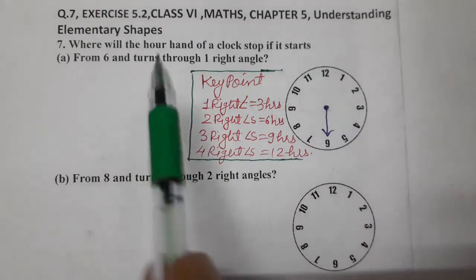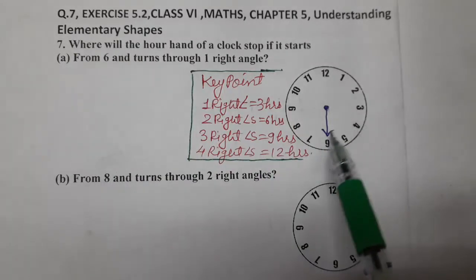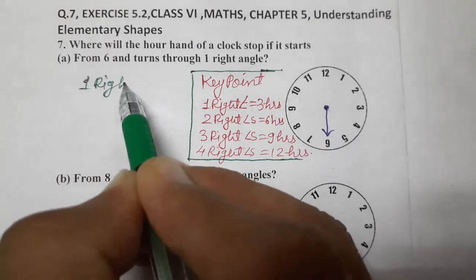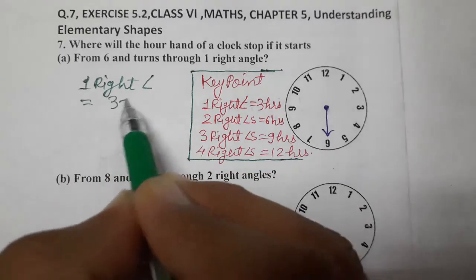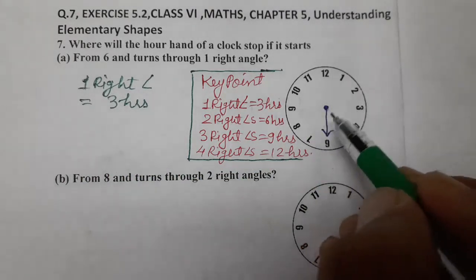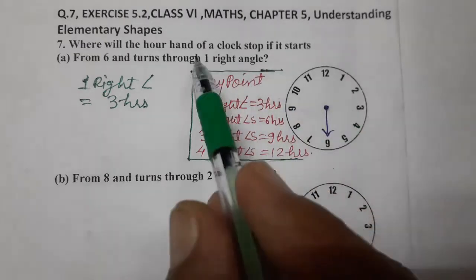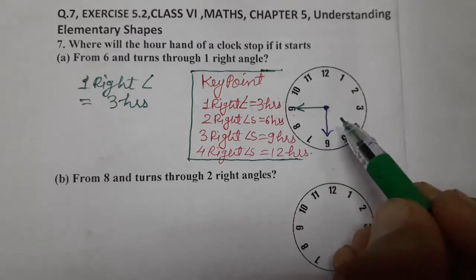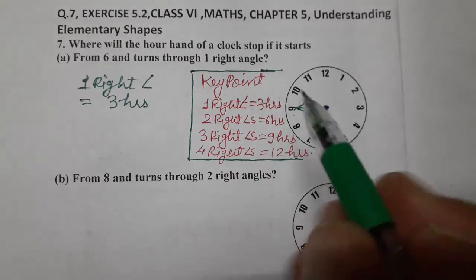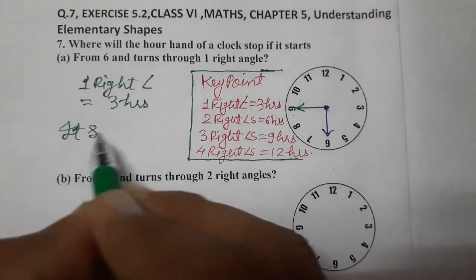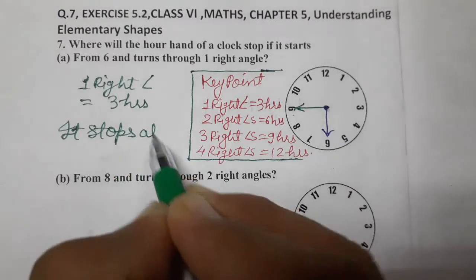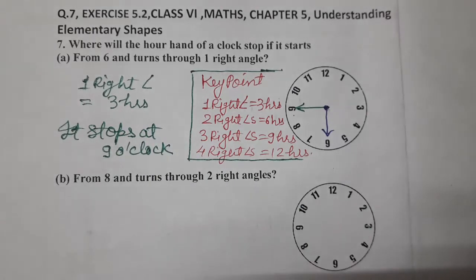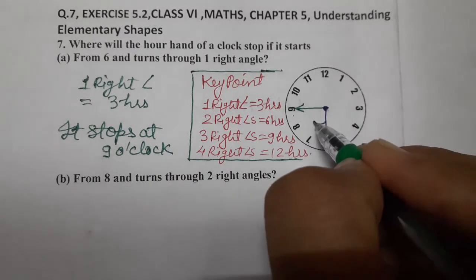First one: starting from 6, turning through one right angle means 3 hours. Moving 3 hours in the clockwise direction: one, two, three — we stop at 9. So the hour hand of the clock stops at 9. This is clockwise, so make the arrow accordingly.